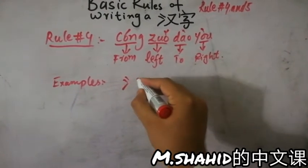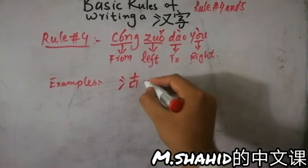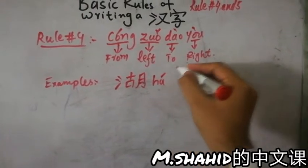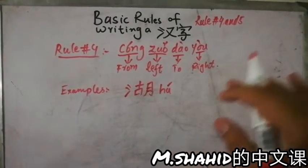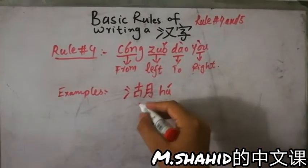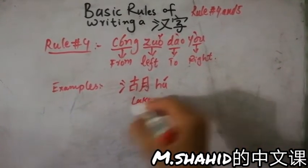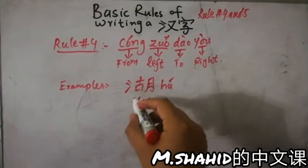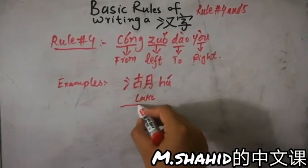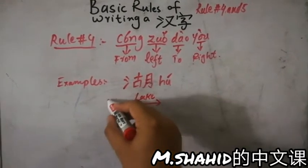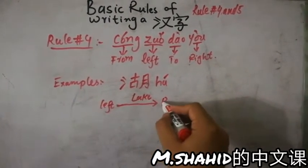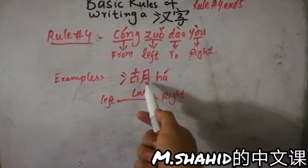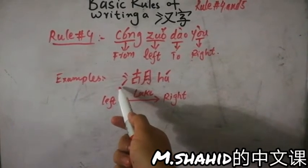One example could be 河 hé, hé, hé means lack, like hé. Now you see what was the order we maintained in writing this character. We just wrote this letter from left to right. The direction is like this.